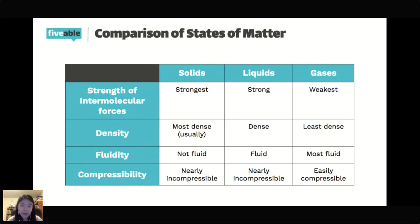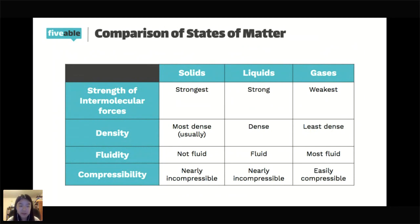Second, density: solids are usually the most dense, though there are exceptions like ice; liquids are also very dense because the intermolecular forces still hold particles super close together; and gases are the least dense because they take up the entirety of the space, giving the highest volume for the same amount of mass. Third, fluidity: solids are not fluid at all; liquids are fluid; and gases are the most fluid.